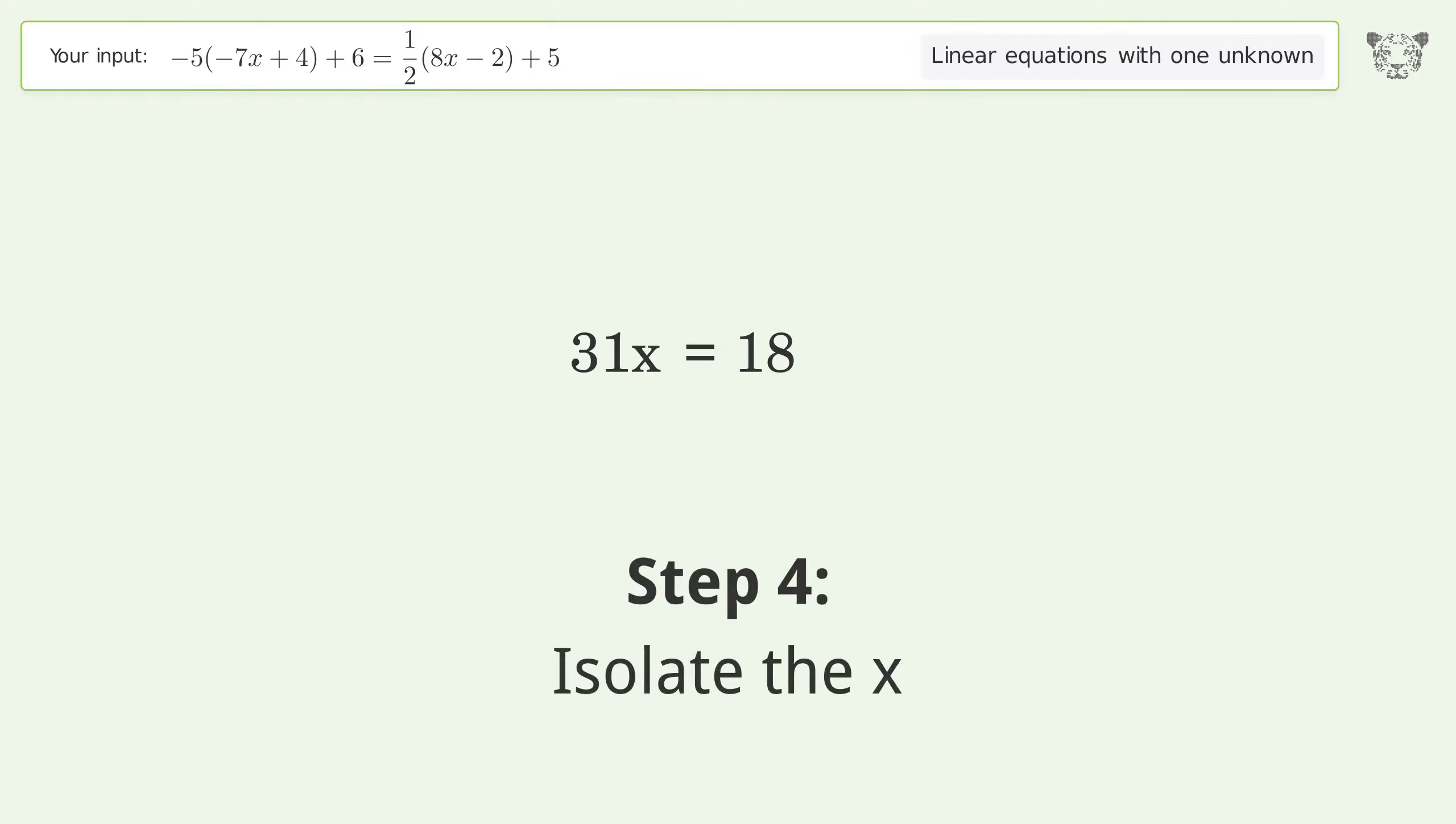Isolate the x. Divide both sides by 31. Simplify the fraction. And so the final result is x equals 18 over 31.